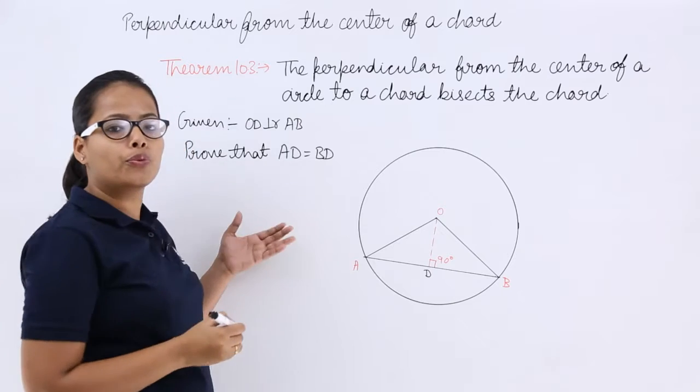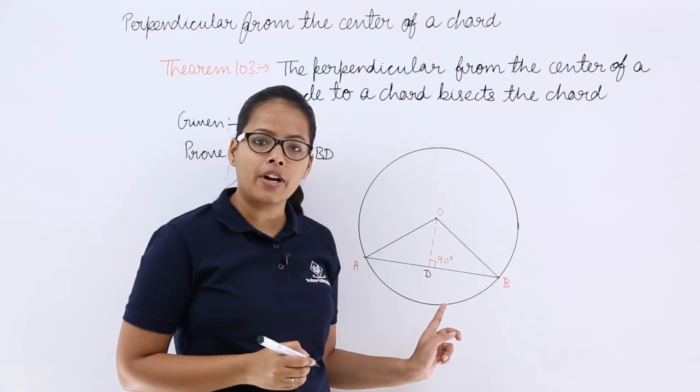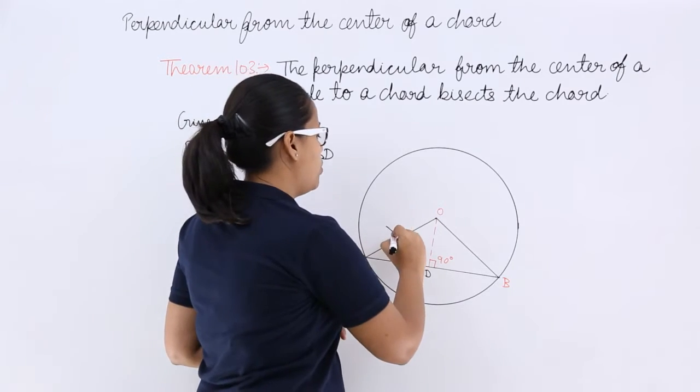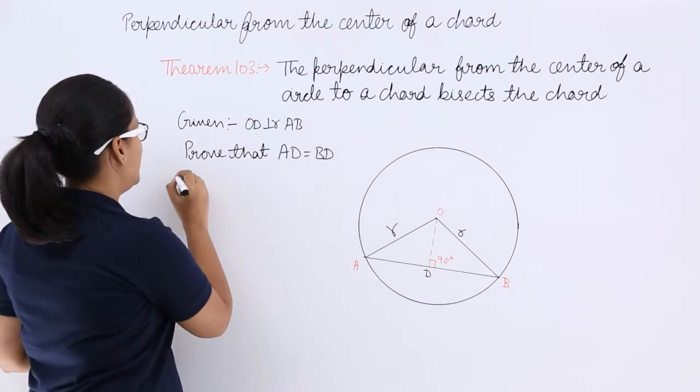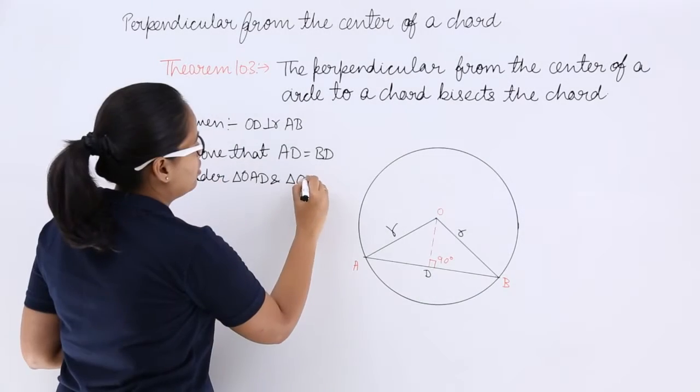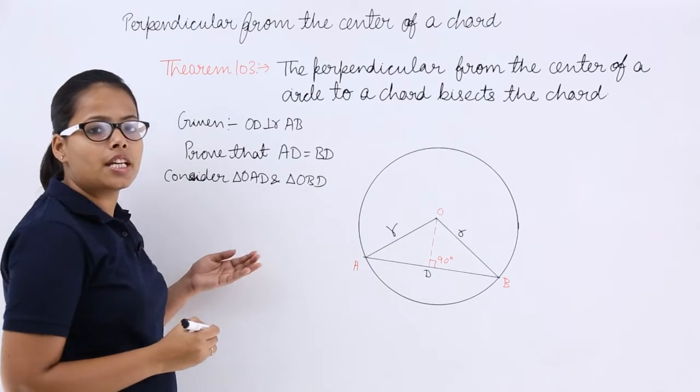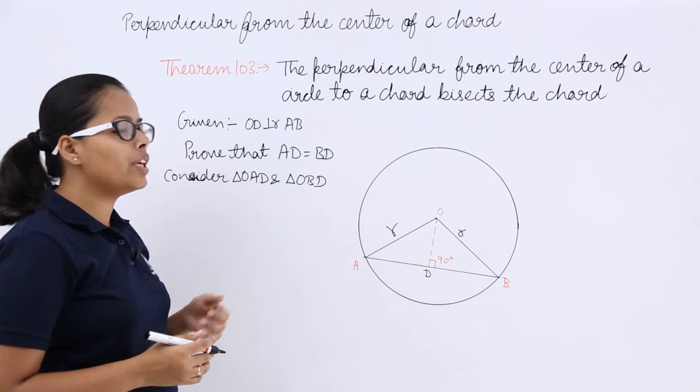How will you prove this? You know that OAD as well as OBD are both right angle triangles, and you know that OA is equal to OB. Let's consider triangle OAD and triangle OBD. In both of these triangles,